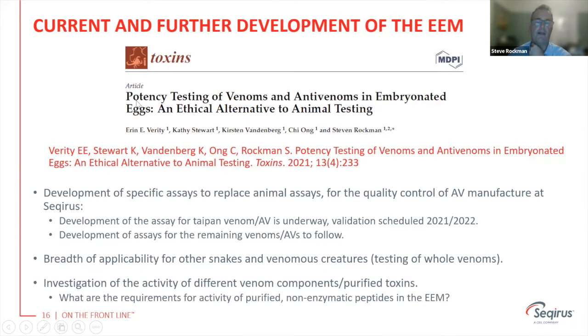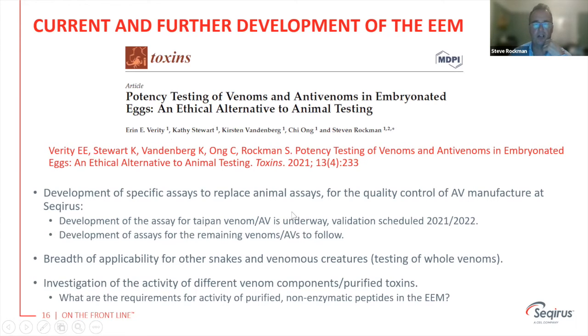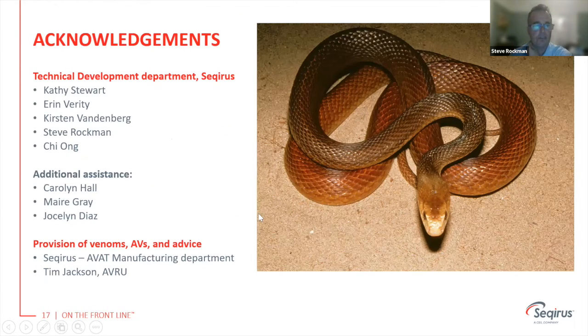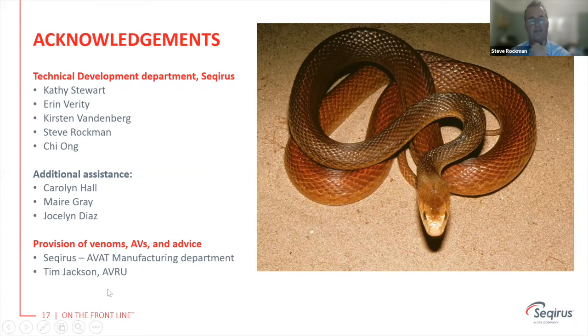We've published this data — the article is in Toxins, titled 'Potency Testing of Venoms,' with first author Erin Verity. We are very happy to share our procedures to enable other researchers to adopt this and move away from using animal models. I'll conclude by thanking all the people who did this work: Cathy Stewart, Erin Verity, and Kirsten Vanderbilt, who did the majority of the work, and Tim Jackson from the Australian Venom Research Unit for his great advice. I'll be very happy to answer questions.